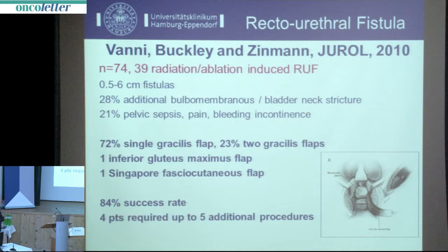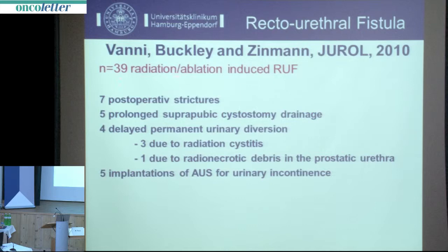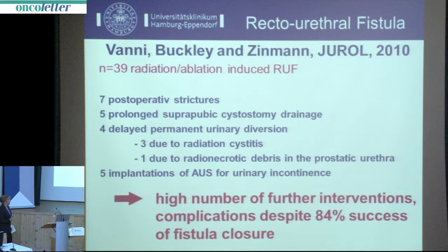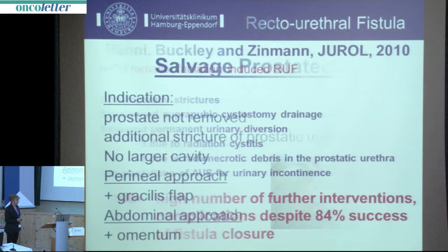The publication by Leo Sinman has the highest number of cases. Of 39 with radiation- or ablation-induced fistulas, 72 percent had a single gracilis flap and 23 percent had two gracilis flaps, with a very high success rate. But again: of those with radiation-ablation-induced fistulas, 7 had post-operative strictures, 5 had prolonged suprapubic cystostomy drainage, 4 had delayed permanent urinary diversion, and 5 required secondary artificial sphincter implants. Despite high fistula closure success, a majority of complex patients will need a high number of further interventions.